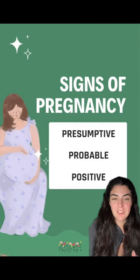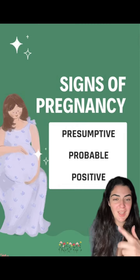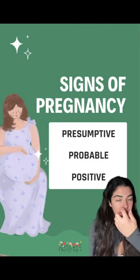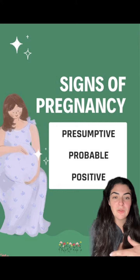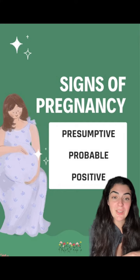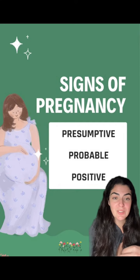So examples of presumptive signs include nausea and excess fatigue. The mother might also tell you that they feel quickening in their uterus — they feel like a flutter.